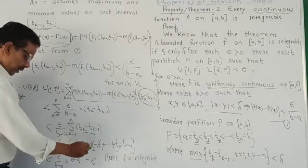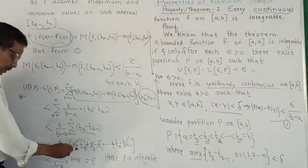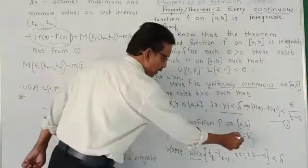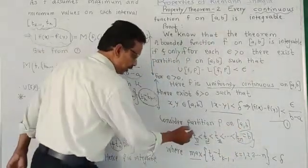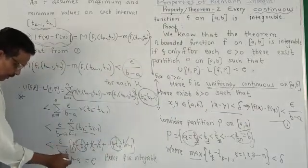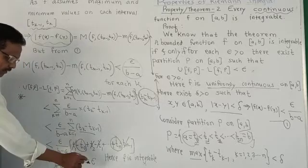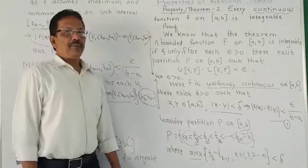t1 minus t0, t2 minus t1, t2 cancel, tn-1 cancel. Only the remaining part is tn and t0. What is tn? tn is b. And t0? t0 is a. Therefore, b minus a. We write here b minus a. And b minus a cancel. Then,